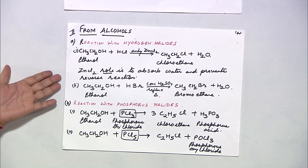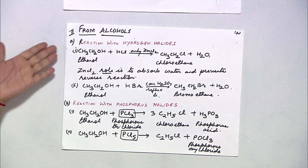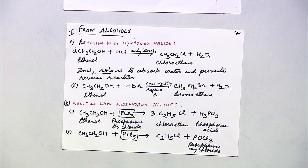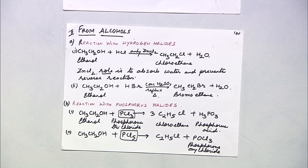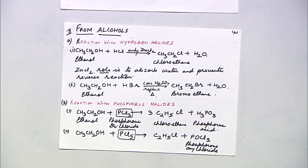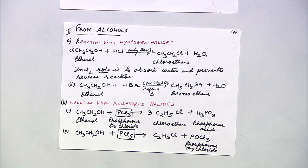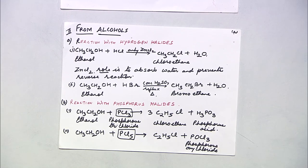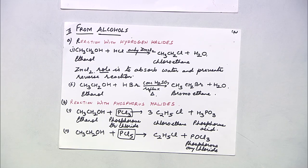Haloalkanes can also be prepared from alcohols. When ethanol reacts with HCl in presence of anhydrous ZnCl2, the product formed is chloroethane and water. ZnCl2 absorbs water and prevents the reverse reaction. When ethanol reacts with HBr in presence of concentrated H2SO4 under reflux and heating, you get bromoethane and water.